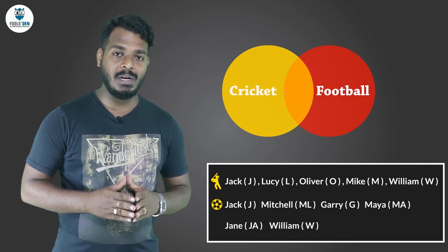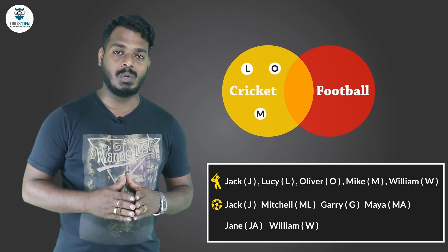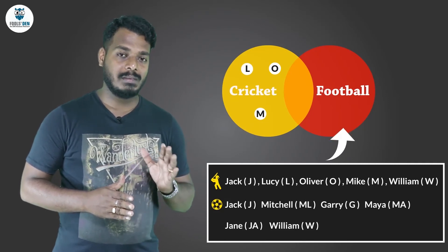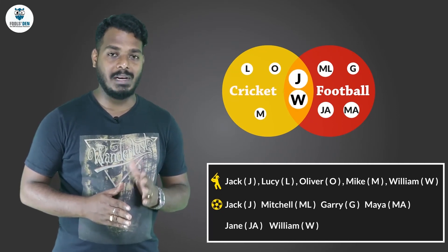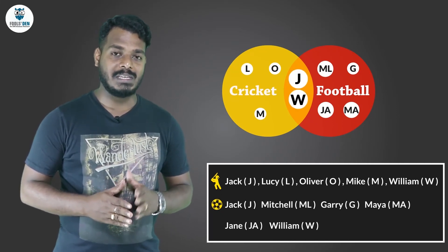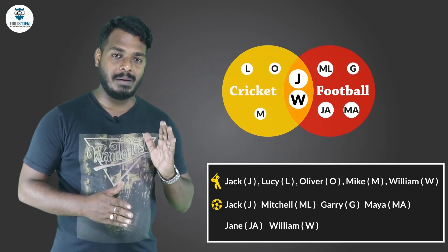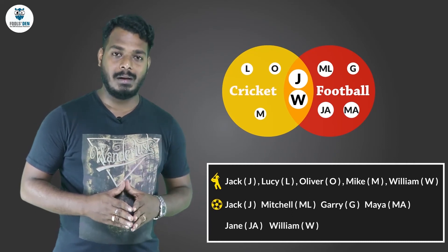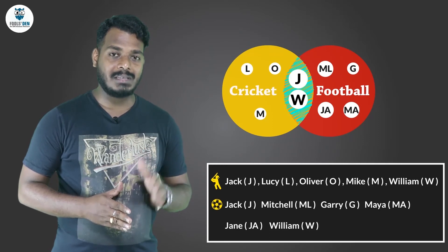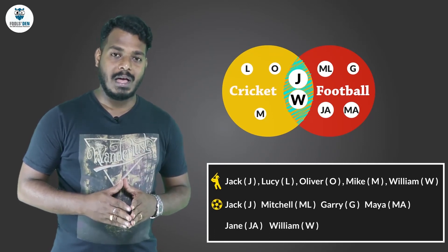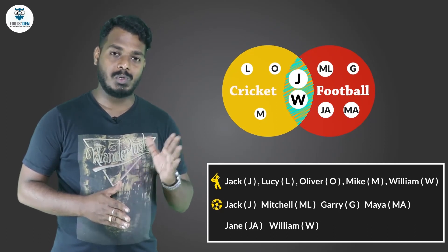He overlapped the two circles partially. Then he put those students who liked only cricket there, and those who liked only football there. Now only two students were left — Jack and William. Since Jack and William had given their names for both sports, he put Jack and William in the middle, because that area is common to both circles, and as both of them liked both sports, they were to be placed in the middle.